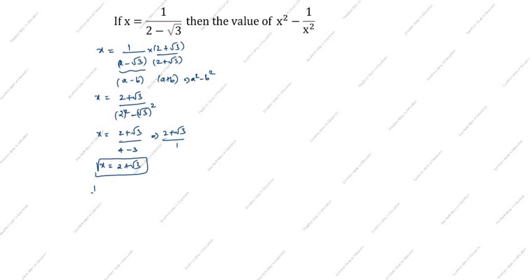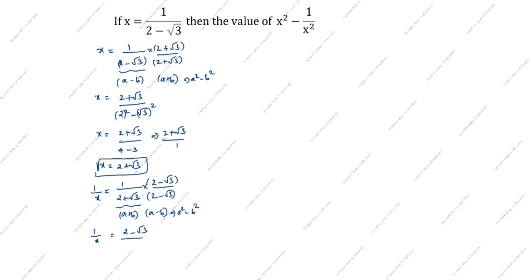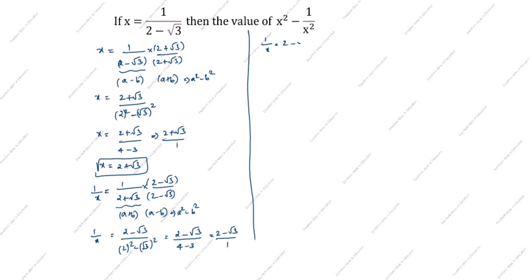Next, we find 1 by x. We write 1 divided by 2 plus root 3, and rationalize the denominator by multiplying by 2 minus root 3 divided by 2 minus root 3. Using the formula a plus b into a minus b equals a squared minus b squared, we get 2 minus root 3 divided by 4 minus 3, which equals 2 minus root 3 divided by 1. So 1 by x equals 2 minus root 3.